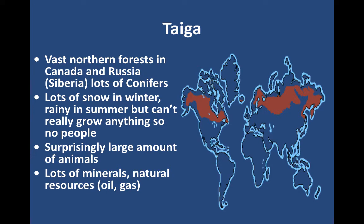As we start to come down a little bit, we have an area called the Taiga — the vast northern forests in places like Canada and Russia, like Siberia. Lots of pine trees and conifer-type trees. You get a lot of snow in the winter, and it's really rainy in the summer, but crops aren't super available because the soil is not great. So you can't grow a lot of food and you don't have a lot of people. But in these regions we also have lots of minerals and natural resources, things like oil and gas, so we definitely have a human presence to extract those materials.